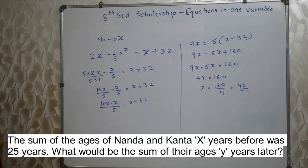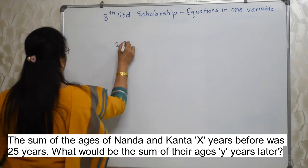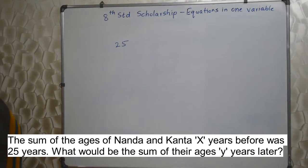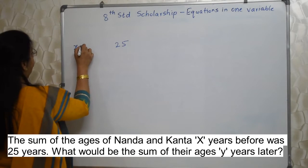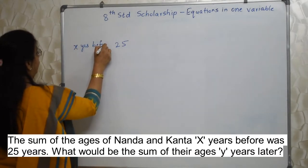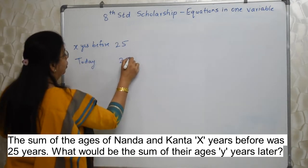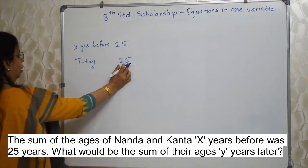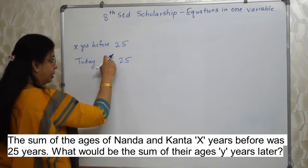Next sum will appear on your screen. The sum of the ages of Nanda and Kanta x years before was 25 years. What would be the sum of their ages y years later? See, x years before their sum was 25. If I want to find out today's age, then what should I do? This is the total of Kanta and Nanda. So after x years, now x years have passed and we have come to today.